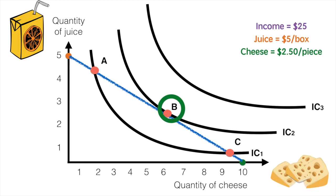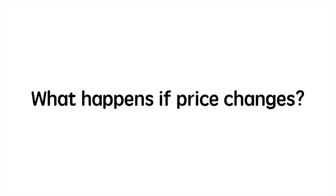Next we will look at changes in price and income and the impact they have on the combination of goods that consumers purchase. First, let's take a look at how the combination of choices changes when there is a change in price.